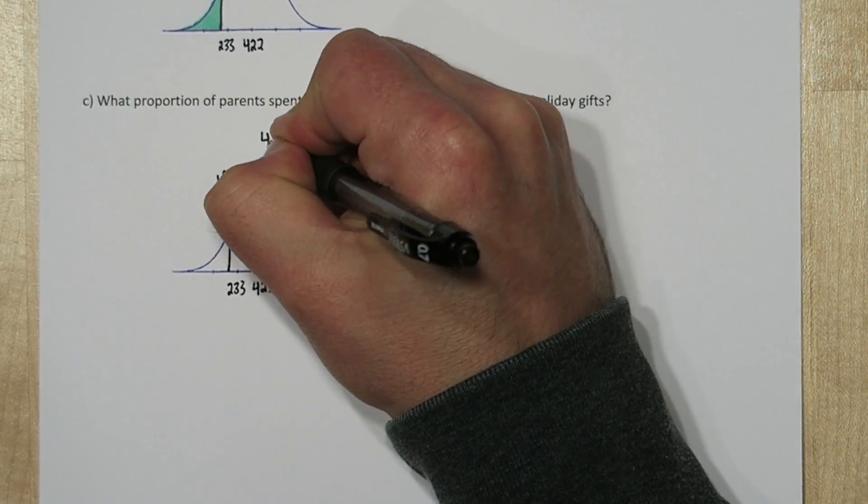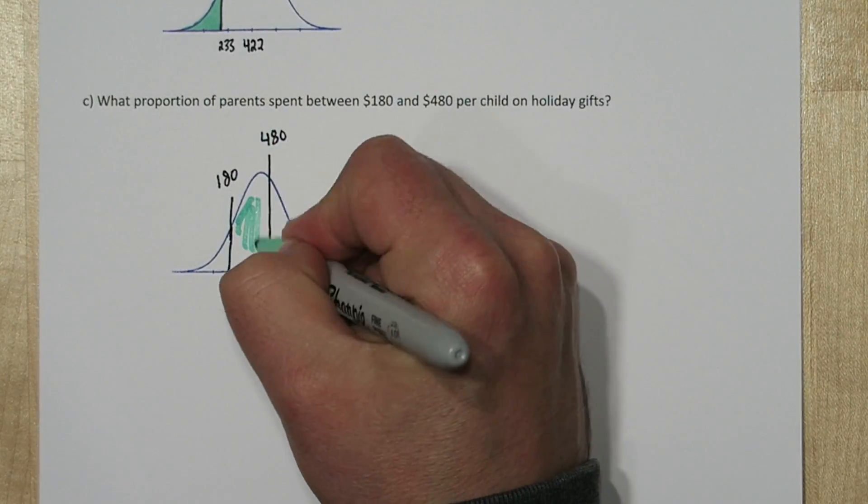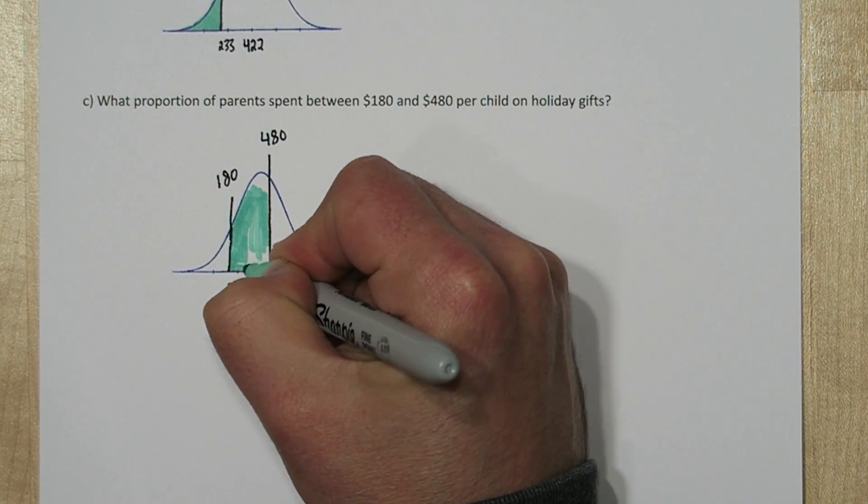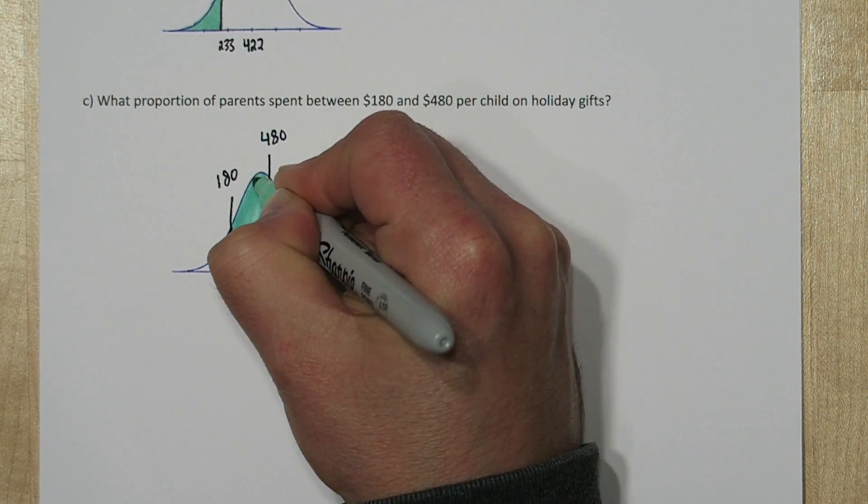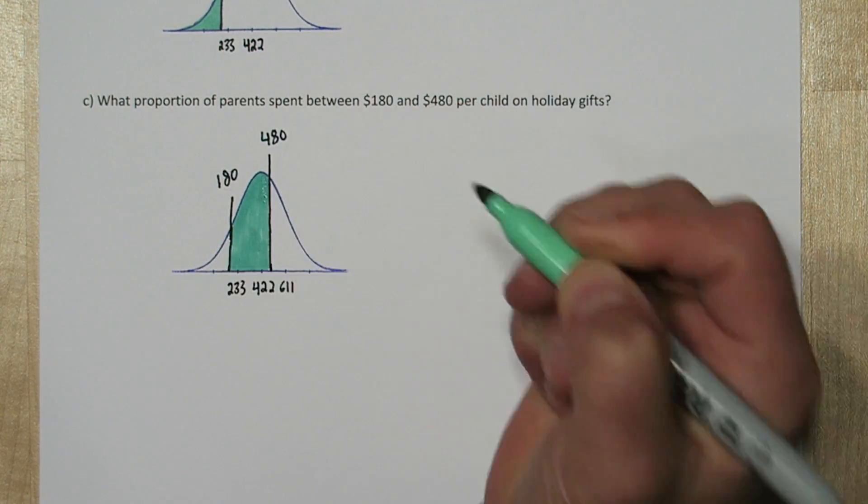And maybe 480 is about here. So we're interested in what proportion was between this 180 and $480 spending. That's this area in the middle.